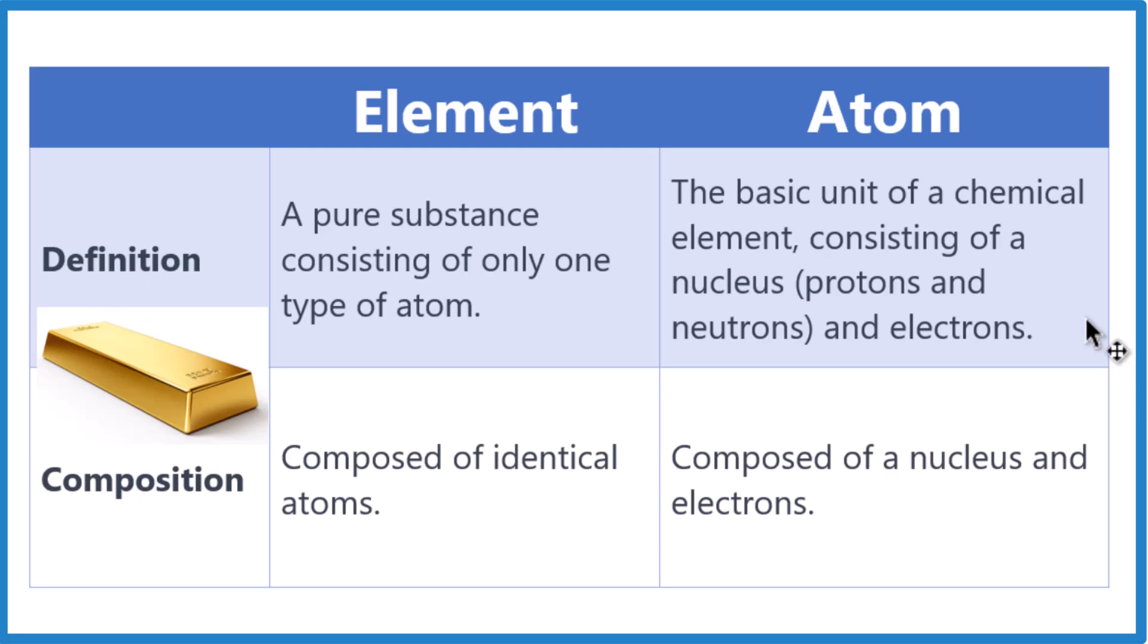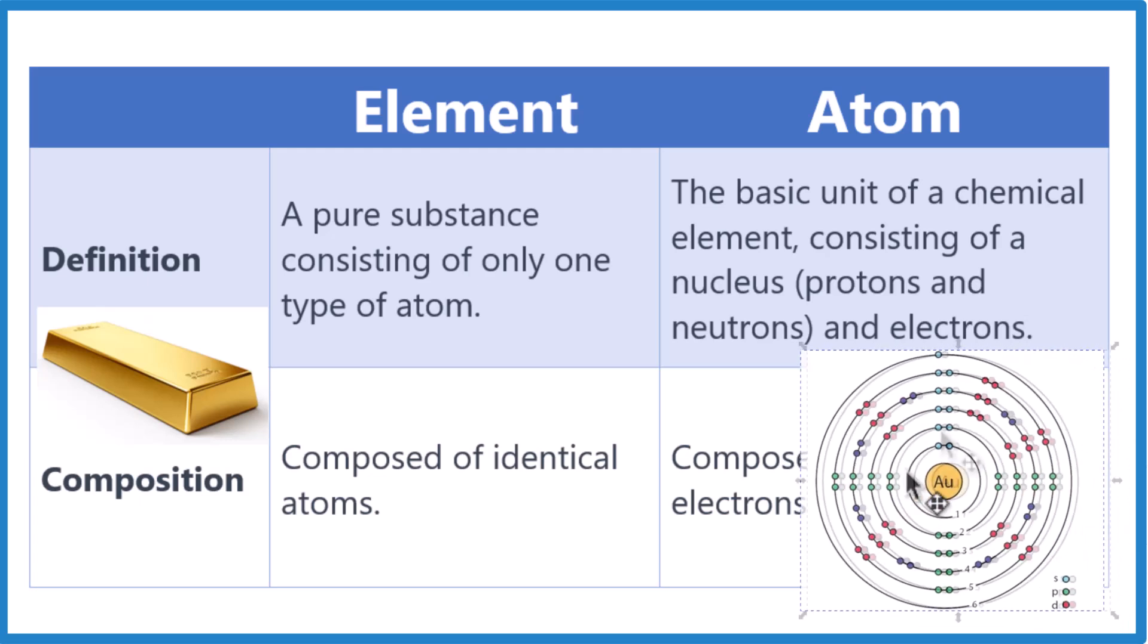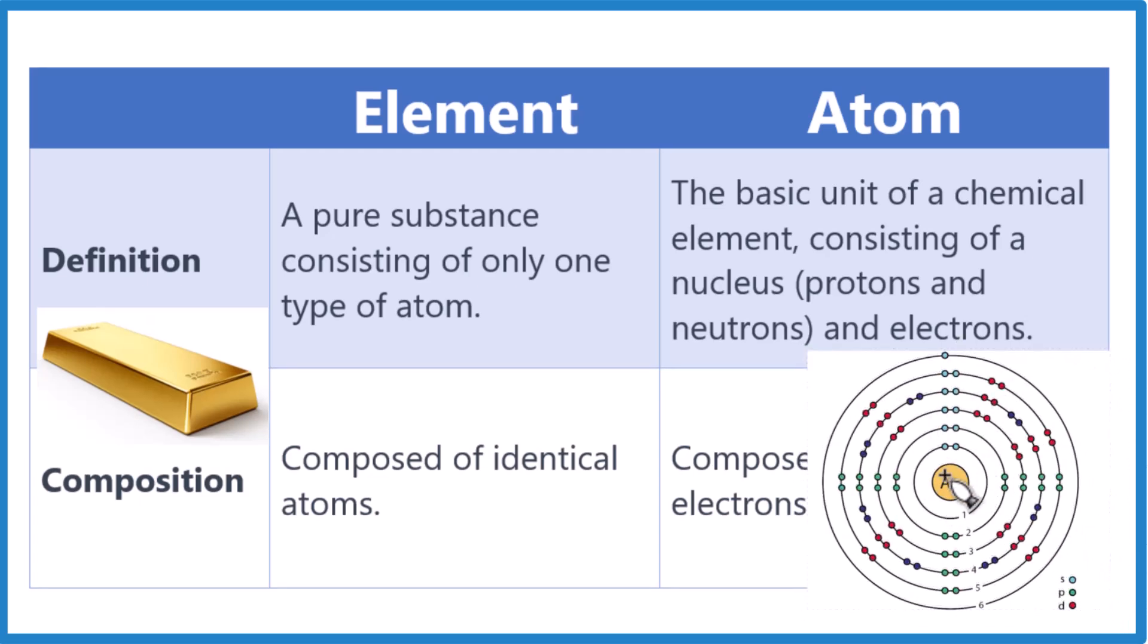If we're talking about an atom, we're usually just talking about the basic chemical unit of an element, like this. We have our nucleus with the protons and neutrons, and it's surrounded by electrons.